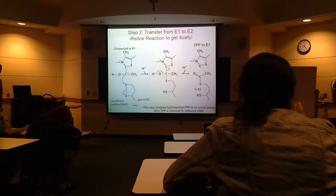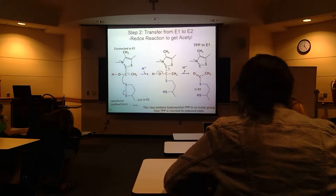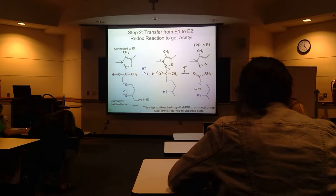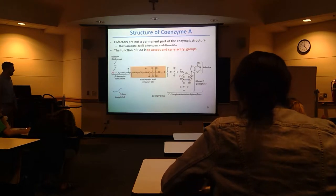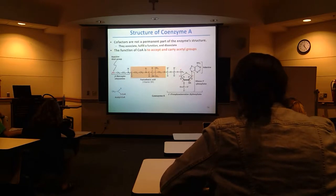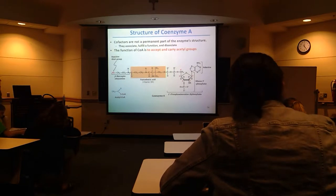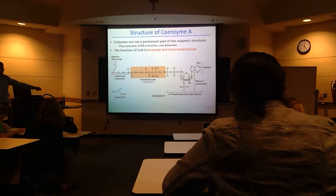So this is just moving the acetyl group into E2. Now we're covalently attached in E2 to lipoyllysine, and the TPP in E1 is just going to hang out ready for another pyruvate later. Now we have to mention acetyl coenzyme A.